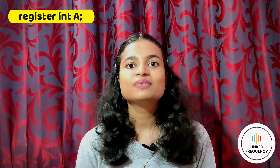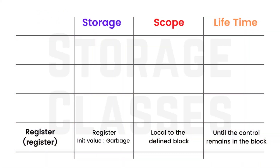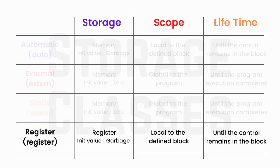For example: register int value. The overall features of a register variable are: storage is in the register, the default initial value is a garbage value, scope is local to the block in which it is defined, and the lifetime lasts while the control remains in the block where the variable is defined.